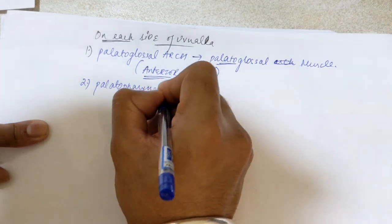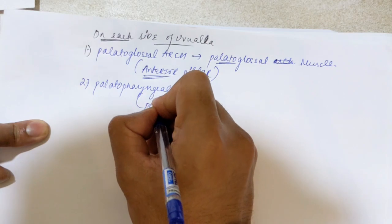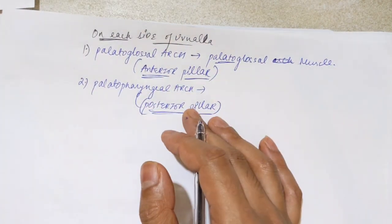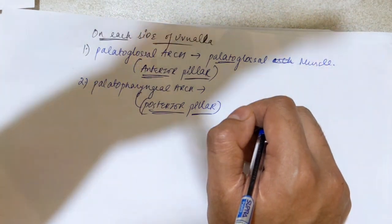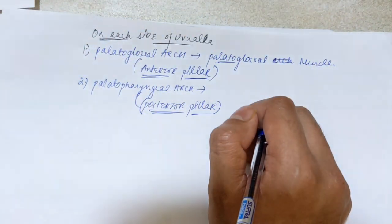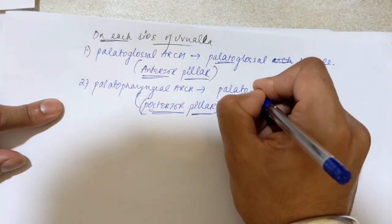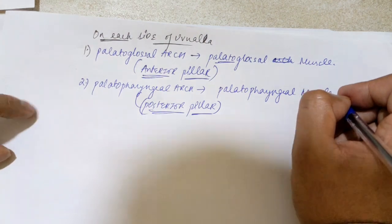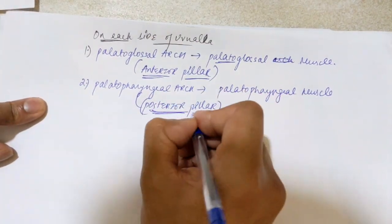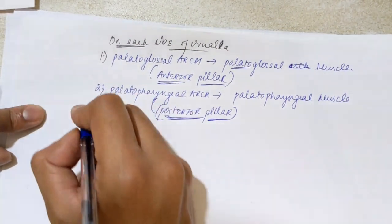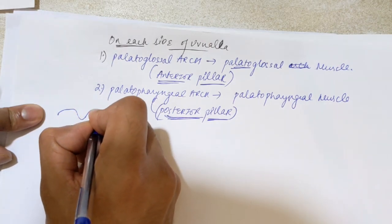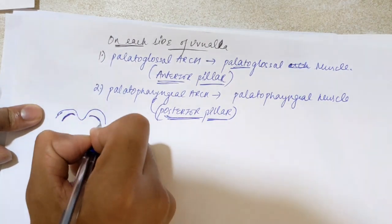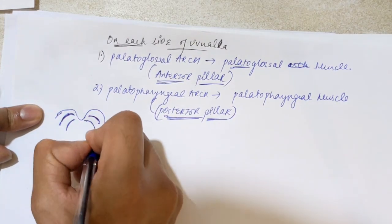The second arch is the palatopharyngeal arc, called the posterior pillar. It goes laterally and forms the anterior boundary for the pharyngeal cavity on the posterior side. It consists of the palatopharyngeal muscle, another muscle of the soft palate. So you have the anterior pillar on the lateral side and the posterior pillar just behind it.